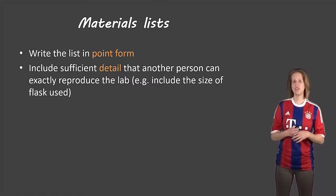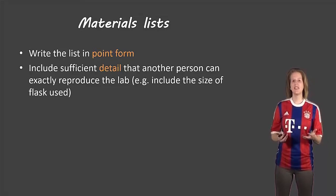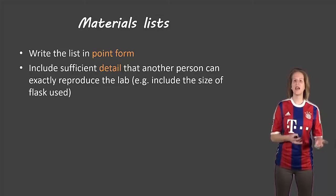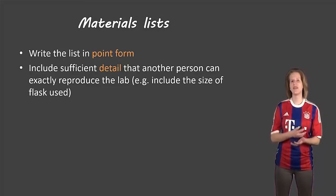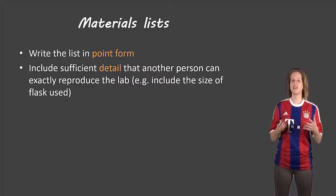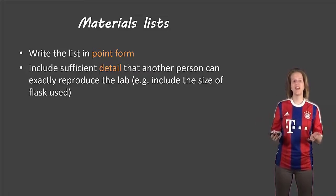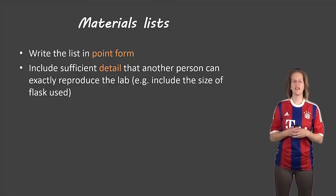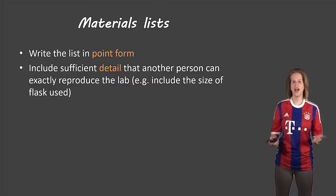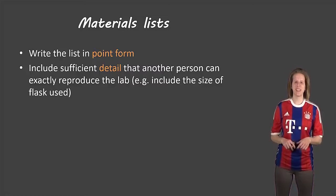The next point: there should be sufficient detail that someone else could do the exact same lab in the exact same way. Now if you plan on taking science in university, or if you plan on becoming a scientist in real life, things are a little bit different. We don't give as much detail like we used a 250 ml Erlenmeyer flask — they won't say that, but in high school it is necessary.